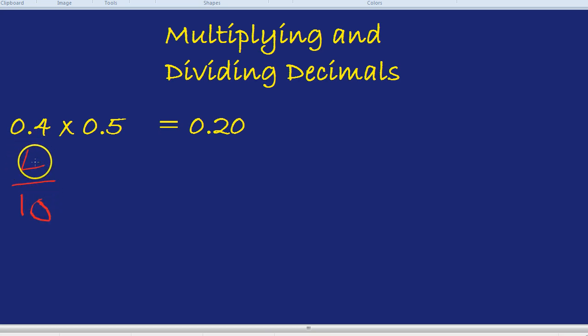0.4 is just 4 over 10. It's one number after the decimal place, so it's going to be something over 10. 0.5 is one number after the decimal place, so it's going to be something over 10. 5 over 10. Now we have something a lot nicer.